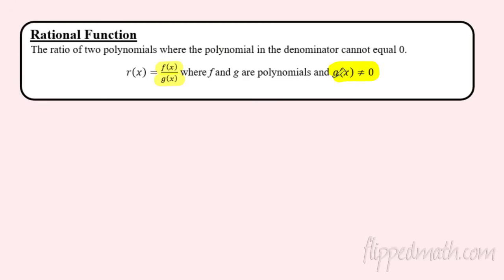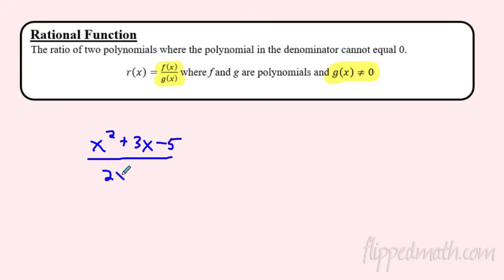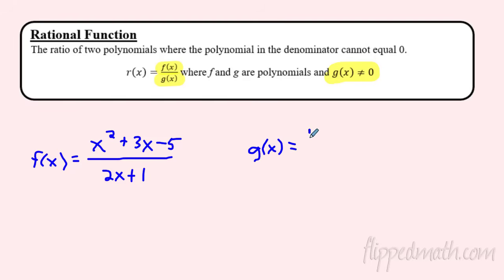The key thing is the denominator cannot equal zero — you cannot divide by zero. So we'll be careful with that throughout this section. For examples, you could take a quadratic polynomial and divide it by a line — that's a rational function. The most basic parent function is just 1 divided by x. It's okay to have a constant on top; you don't need a variable there.